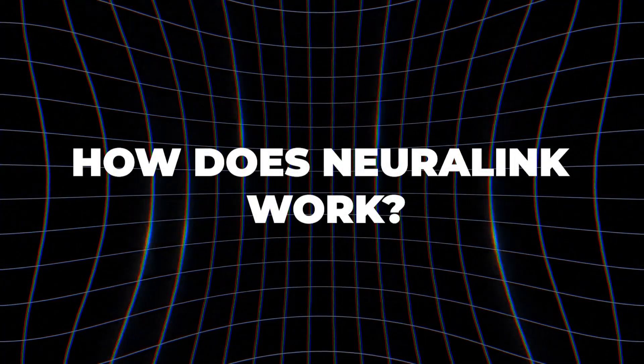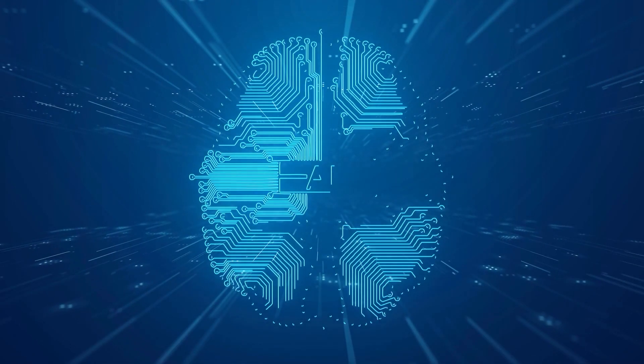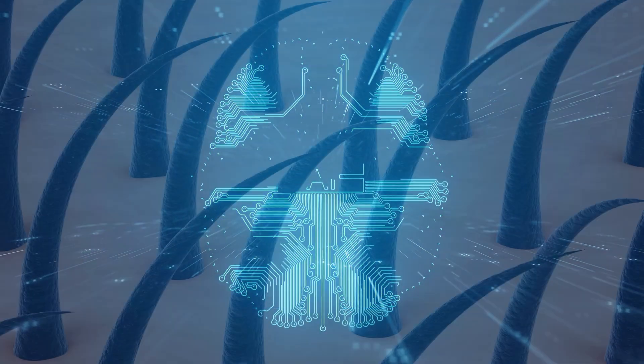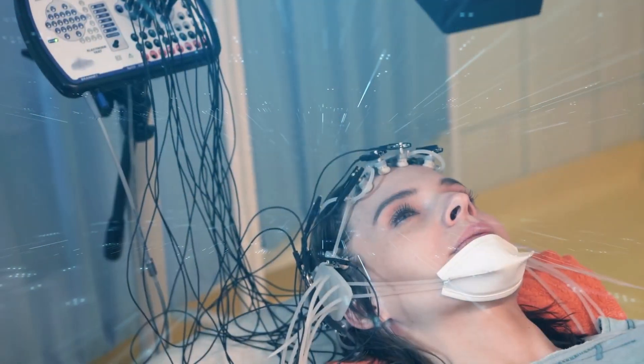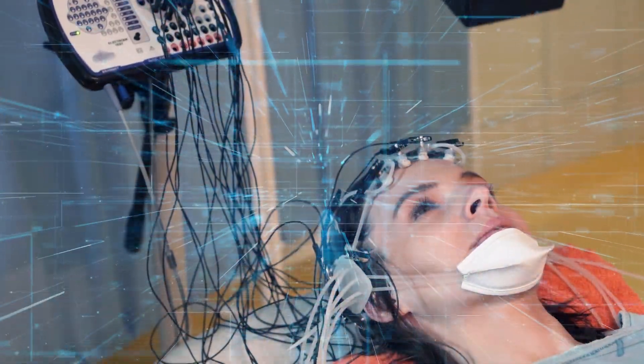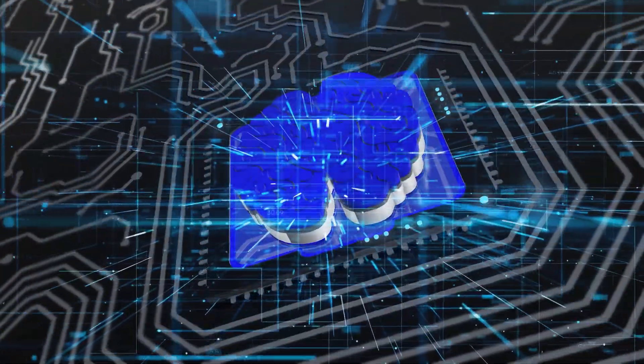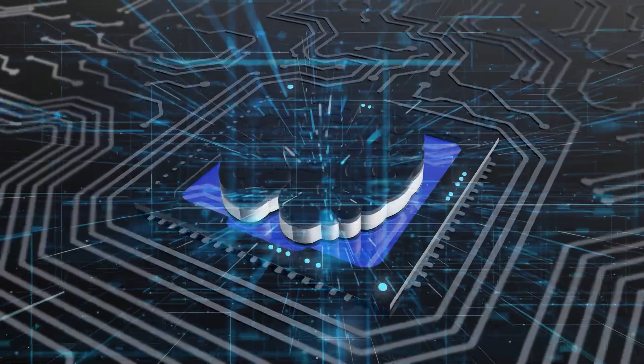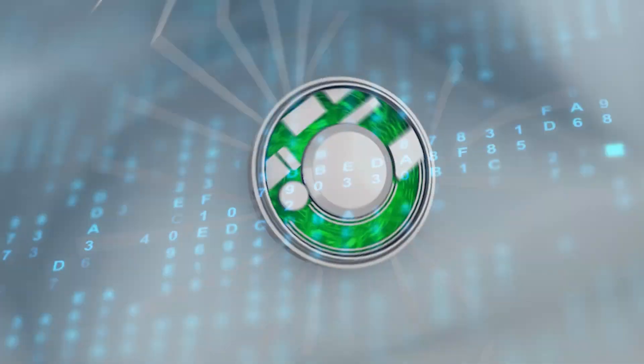How does Neuralink work? The technology behind Neuralink involves ultra-thin threads, thinner than a human hair, which are implanted into the brain to detect neural signals. These signals are then processed by custom-built chips and transmitted wirelessly to an external device.